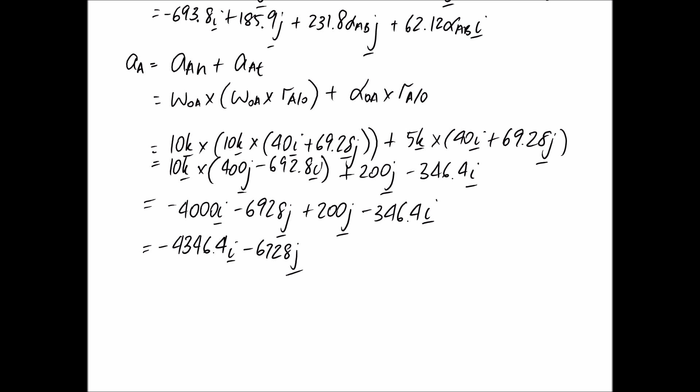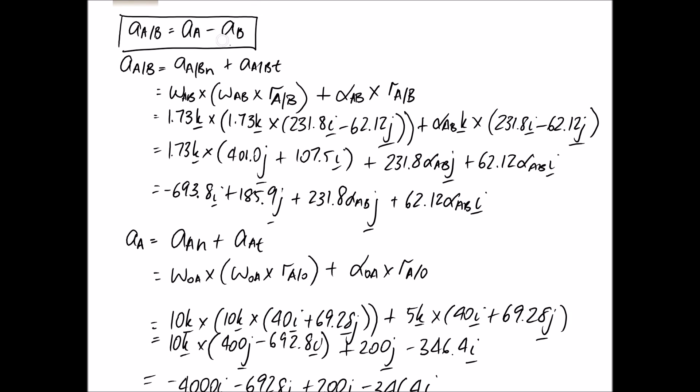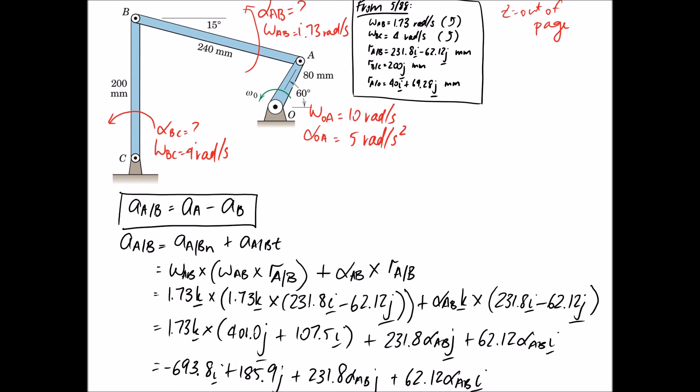Alright, so we have one left that we need to do, which is the acceleration of point B. So remember, this is the equation we're trying to fill out. We just need one more in it. So looking at the acceleration of point B, we're going to be able to relate it back to point C, which is a fixed point, using the angular velocity and angular accelerations here. And again, remember, we've already worked out the radius that we need to use, 200J.